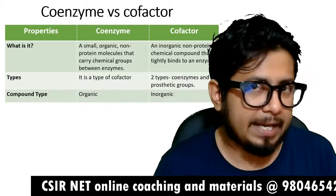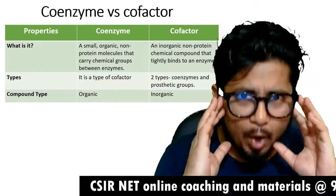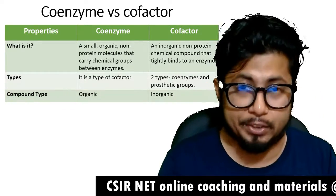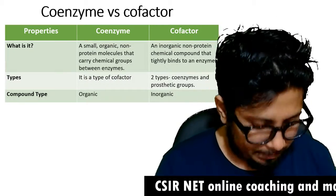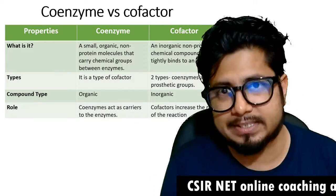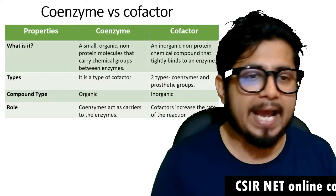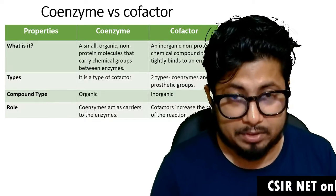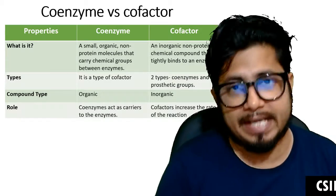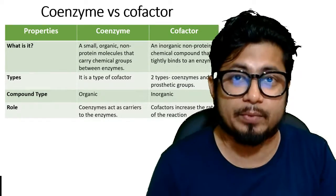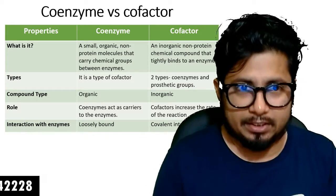In terms of compound type, coenzymes are organic in nature while cofactors are inorganic compounds in nature. As for their role, coenzymes act as carriers to the enzymes, while cofactors increase the rate of reaction by being attached or associated with some enzymes.